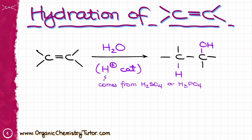The H+, the proton, typically comes from something like H2SO4, sulfuric acid, or H3PO4, phosphoric acid. And make sure that whenever you are choosing your catalyst for the reaction, you are never going to be doing the reaction with HCl, HBr, or HI, because those ones, the hydrogen halides, they can just add across the double bond, and that will be it. You are not going to get the needed catalyst because your catalyst will be fully consumed.